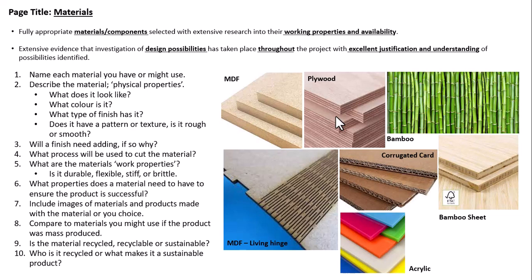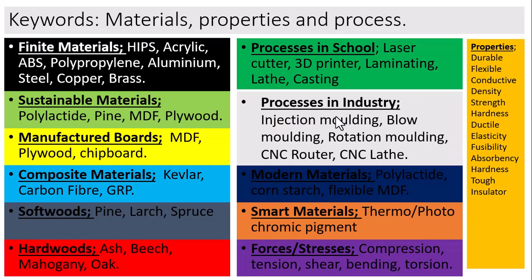For those who haven't used bamboo sheet before — it looks similar to plywood; the bamboo is cut into strips and glued together, so a picture would be useful to describe its physical properties. Compare the materials to what you might use in industry. You must discuss whether the material has already been recycled, whether it can be recycled, and whether it's sustainable. Explain the lifecycle of your material after it's been used as a product. This slide also shows some material properties, different materials, and processes used in school or in industry.